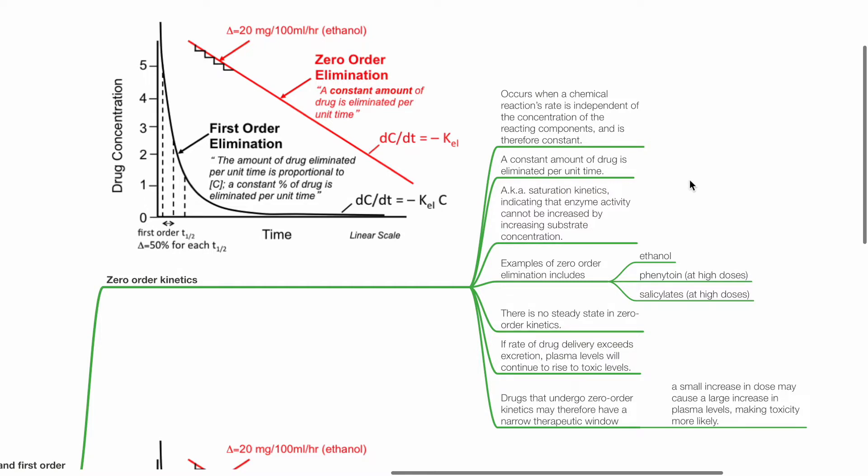Examples of zero-order elimination include ethanol, phenytoin, and salicylates at high doses. There is no steady state in zero-order kinetics. If the rate of drug delivery exceeds excretion, plasma levels will continue to rise to toxic levels.